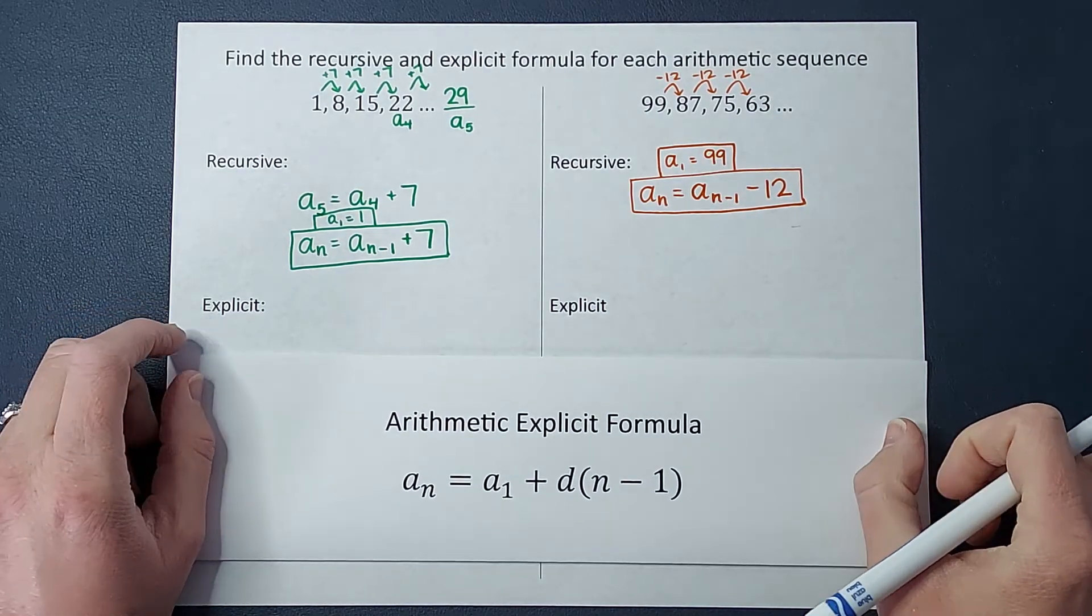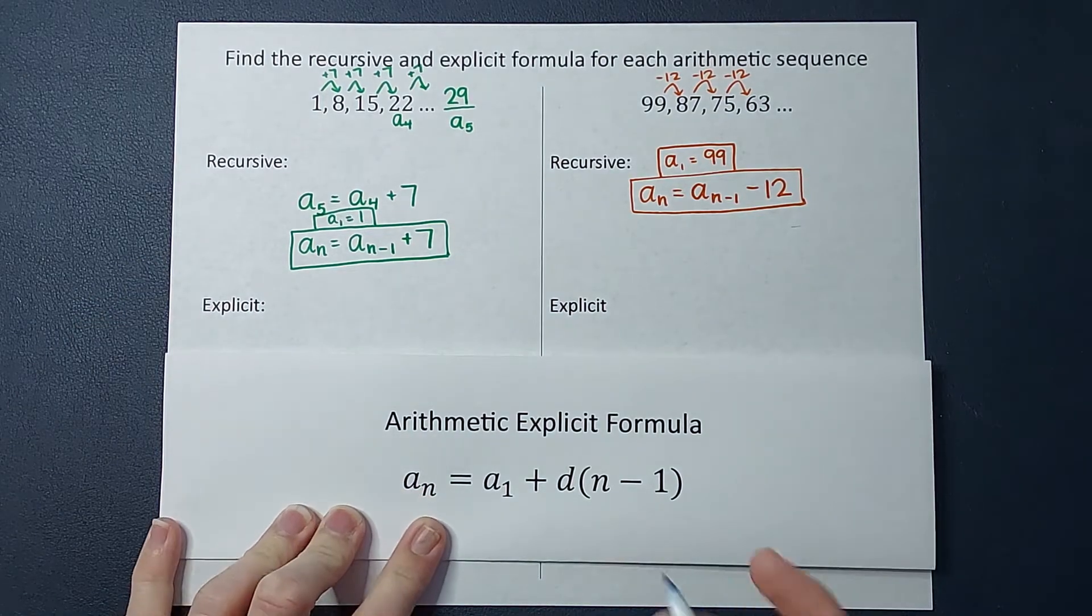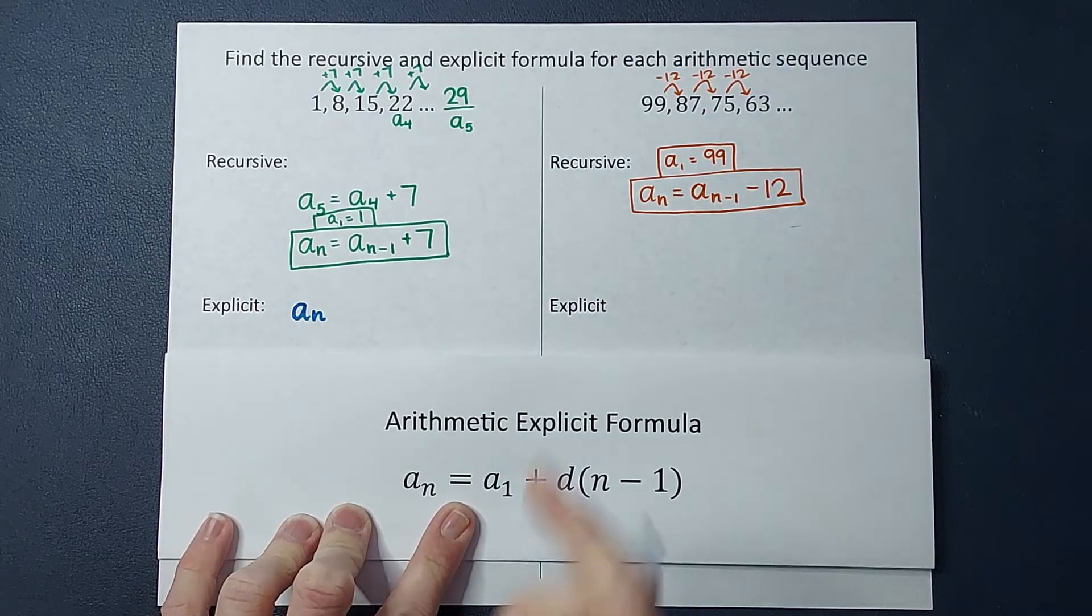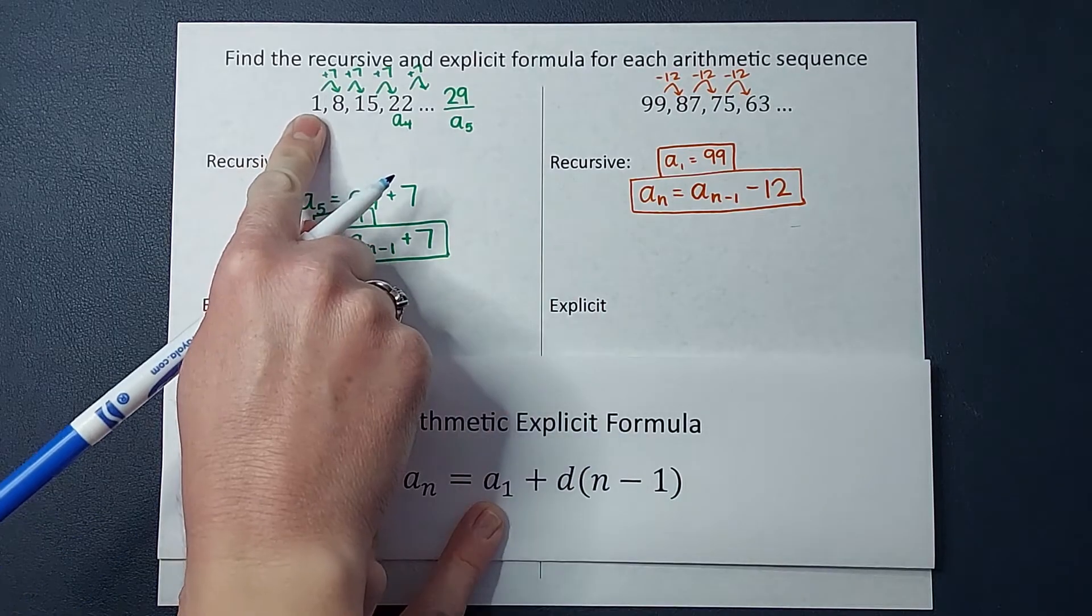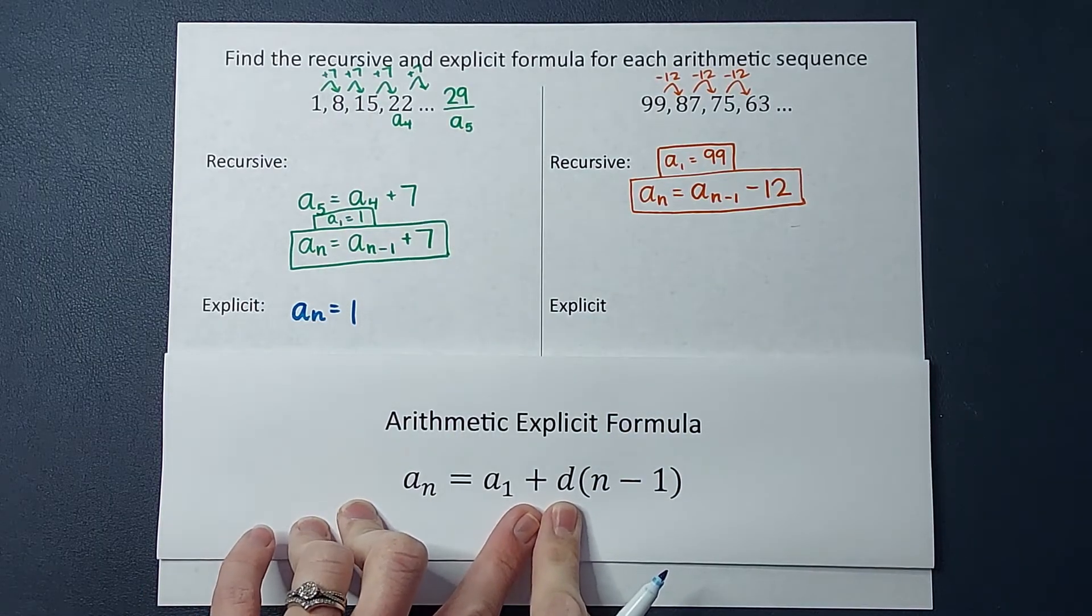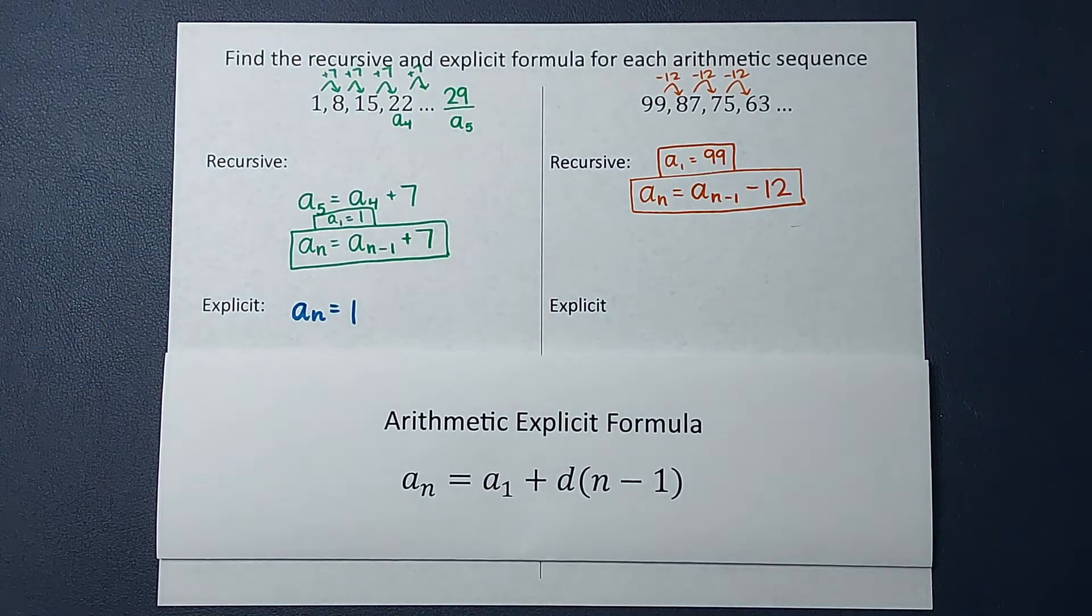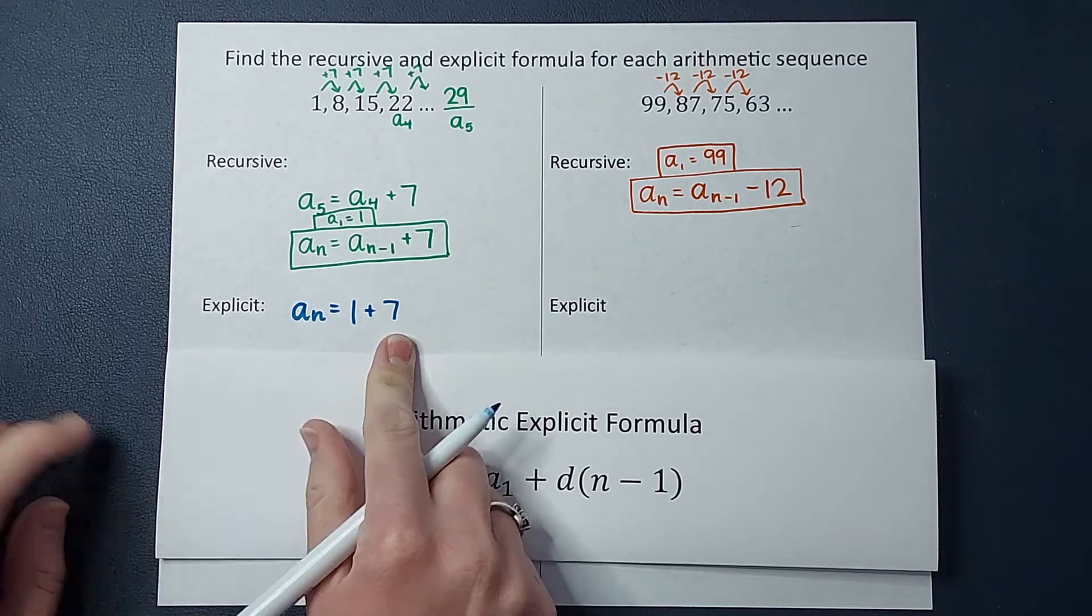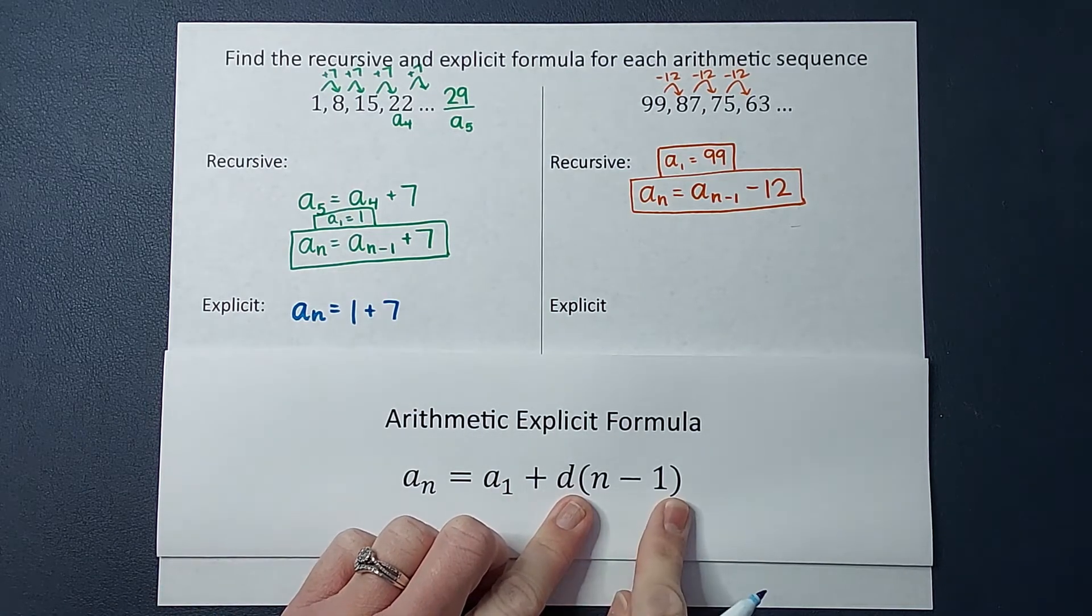Here it is. This is the magic. So I'm going to explain this as we fill it in. Remember a sub n means whatever number you want to find. That is equal to my first term in the sequence. In this one it is one, my first term. And then we're adding the common difference. That's what d stands for. So basically how is it changing? Well, we're adding seven. So one plus seven, but that's not all. That would give me the second term, but what about the rest? Well, that is where this n minus one comes in.